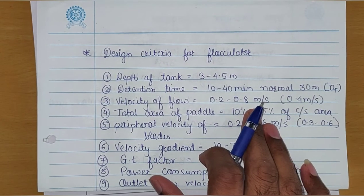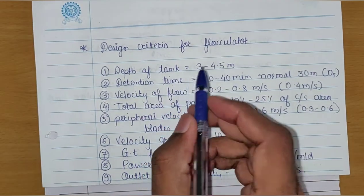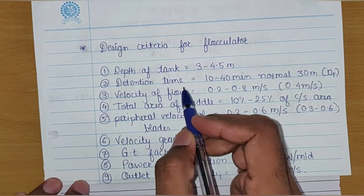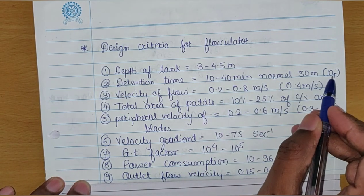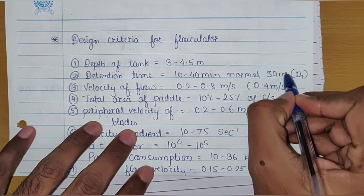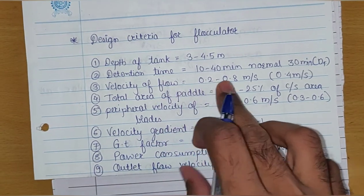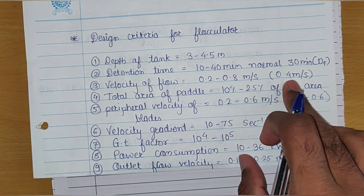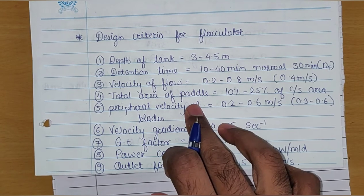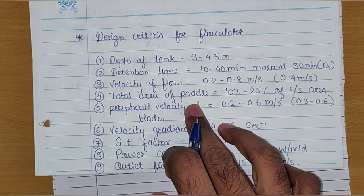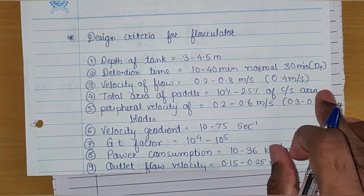First we will see the design criteria for the mechanical flocculator. The depth of the tank should be between 3 to 4.5 meter. The retention time for the flocculator is between 10 to 40 minutes, with 30 minutes normally taken. The horizontal velocity of flow is between 0.2 to 0.8 meter per second, preferably 0.4 meter per second. The total area of the paddle should be in the range of 10 to 25 percent of the cross sectional area.